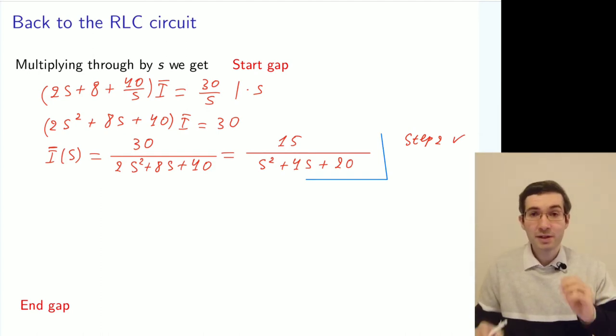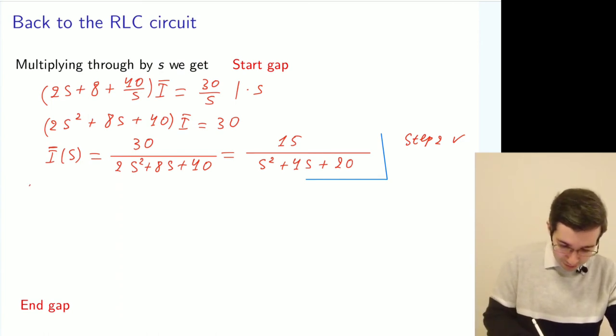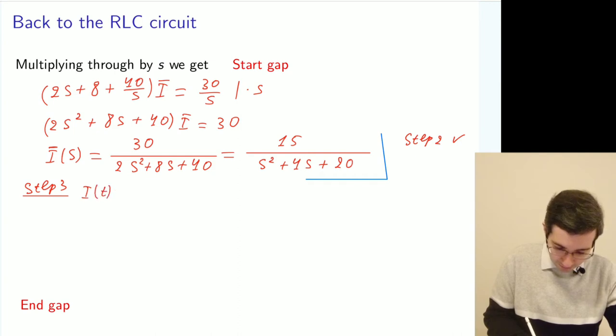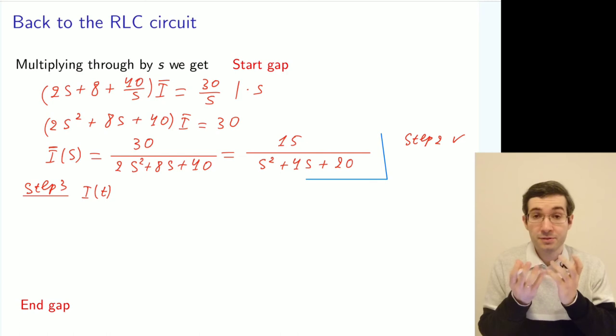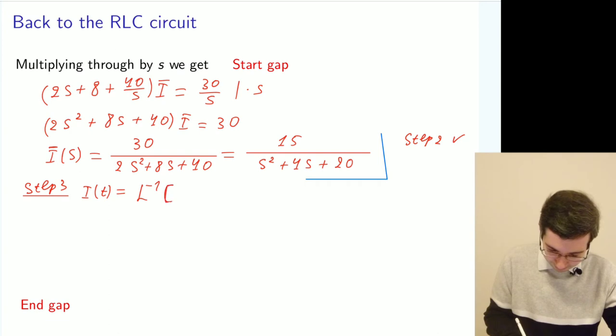Step 3. We need to apply an inverse Laplace transform to go back from the s domain to the time domain. So we do an inverse Laplace transform which will give us the actual current in the physical units of time. But how to do it?